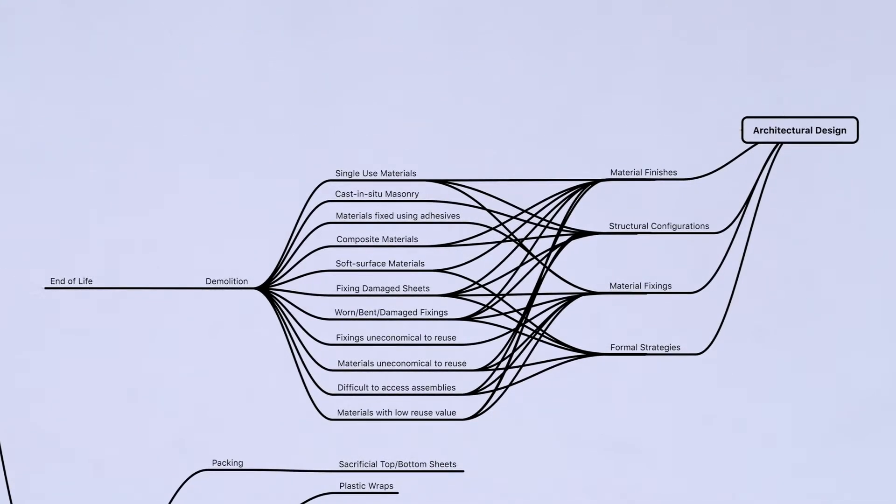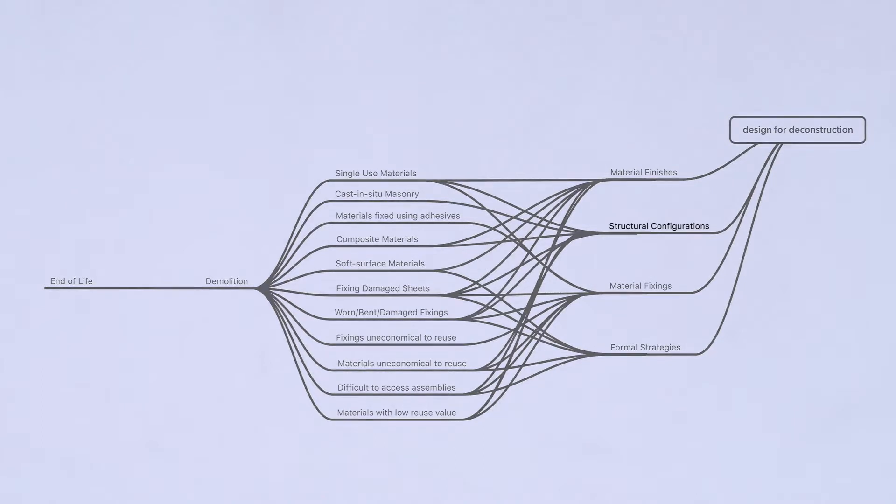Here, the amount of materials that can be salvaged and reused depend almost totally on the decisions made by the architect at the time of design. Material finishes, fixings, formal characteristics and structural configurations all influence the deconstructibility of a building.